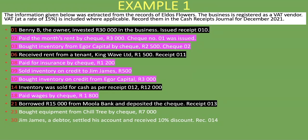On the 23rd, bought equipment from Chiltree by check 7,000 rand — whenever you see the word 'bought' or 'paid', it doesn't go into the cash receipts journal as you're not receiving money. On the 30th, debtor Jim James settled his account and received a 10% discount, receipt 014. We are receiving money so it goes into the cash receipts journal.